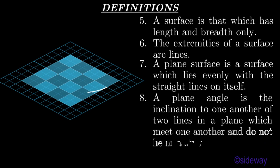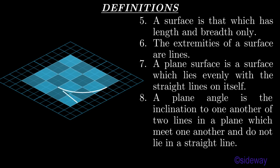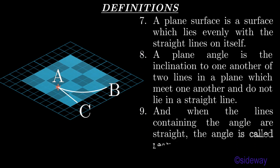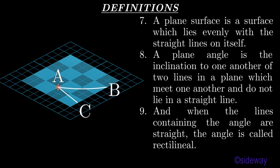A plain angle is the inclination to one another of two lines in a plane, which meet one another and do not lie in a straight line. When the lines containing the angle are straight, the angle is called a rectilinear angle.